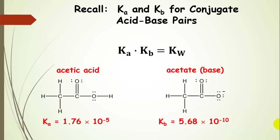We also found that if we multiply Ka and Kb together, we're going to get Kw. That's for conjugate acid-base pairs — they have to be conjugate acid-base pairs for that to work. Multiply Ka and Kb and we're going to get Kw.